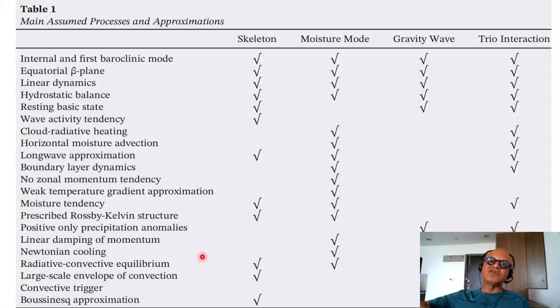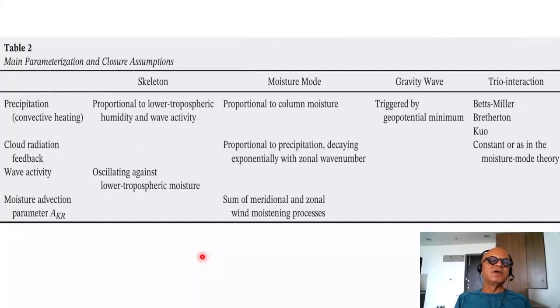It basically says that in the vertical, the density variations are important when they are associated with the G, so rho G kind of terms. So it leads to some approximations in terms of what happens at the top of the atmospheric column. Main parameterizations and closure assumptions focus on precipitation, so convective heating, cloud radiation feedback and wave activity, moisture advection parameter. For example, here precipitation is proportional to lower tropospheric humidity and wave activity. That's what gives it the multi-scale processes.